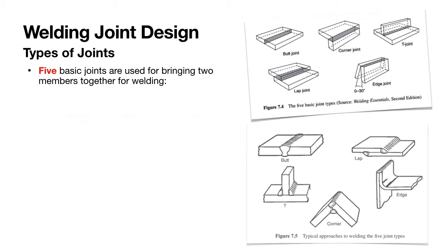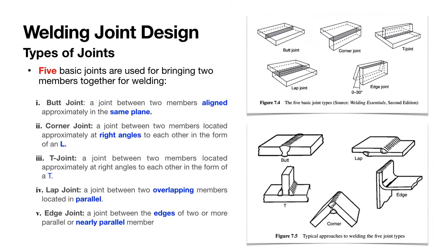The term weld joint design refers to the way pieces of metal are put together or aligned with each other, and the configuration of these members are basically five types: butt, lap, T-joint, corner, and edge.